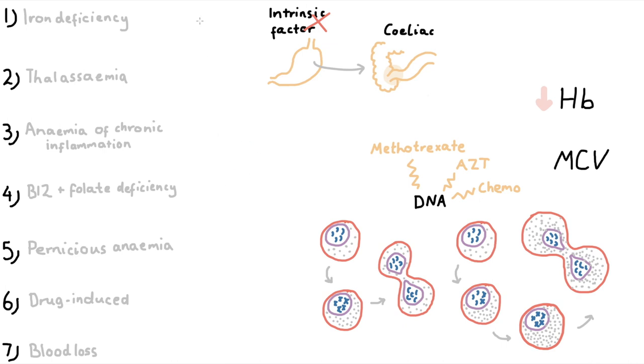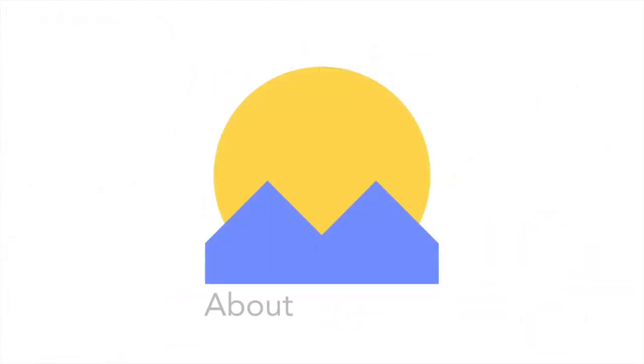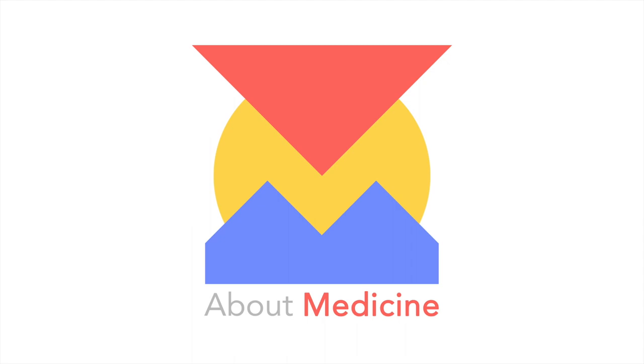So as a quick summary, we covered three types of microcytic anemia, which are all due to some kind of deficiency in hemoglobin. We have three types of macrocytic anemia, which are all due to defective DNA synthesis. And we've covered one type of normocytic anemia, a direct result of losing blood. We'll cover the hemolytic anemias next, so keep an eye out for that. But for now, thanks for watching, hit subscribe, and we'll see you next time.